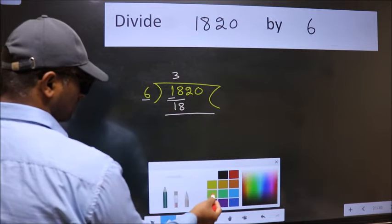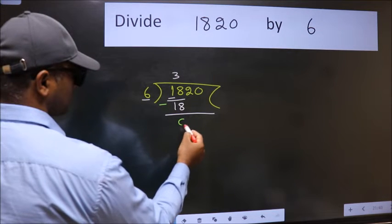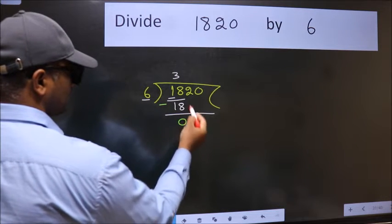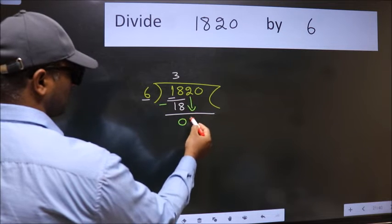Now, we should subtract. We get 0. After this, bring down the beside number. So, 2 down.